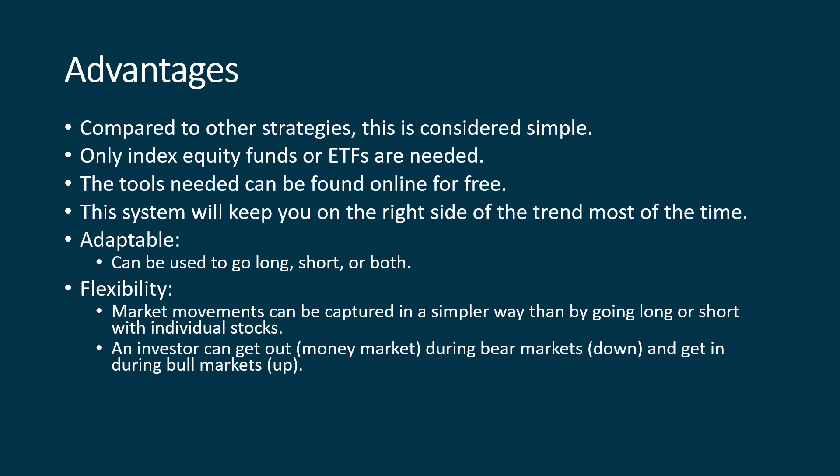An investor can get out, which means you're usually in a money market at that point. So when this happens during a bear market — when we're going down, that's what we call a downward market — and then you can get in during bull markets. This allows you to get out when things get really bad, sit in cash, and then wait for another signal to be generated, and then get back in. This can be used with mutual funds and/or ETFs. Currently, ETFs are all the rage when it comes to the stock market.